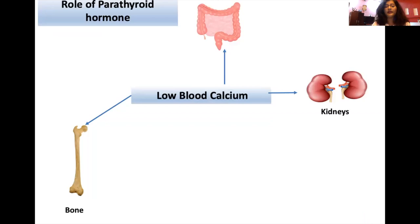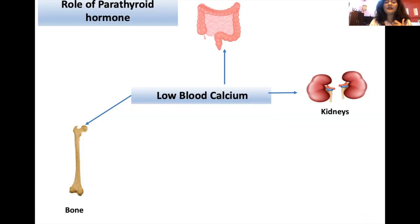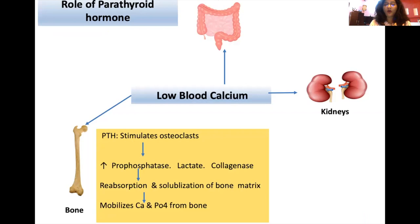Parathyroid hormone (PTH) is secreted from the parathyroid gland as a pre-pro-hormone, cleaved sequentially into pro-parathyroid hormone and parathyroid hormone. PTH is secreted in response to low blood calcium — low calcium acts as the stimulus for its synthesis. In bone, PTH stimulates osteoclasts, which secrete enzymes like pyrophosphatase, lactate, and collagenase. This leads to reabsorption and solubilization of bone matrix by breaking collagen, releasing calcium and phosphate from bone.